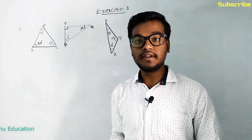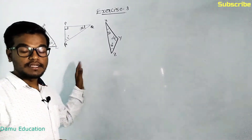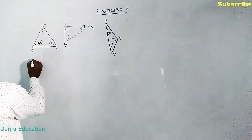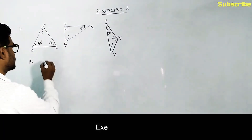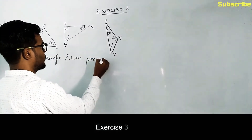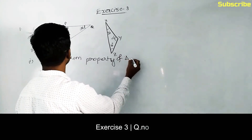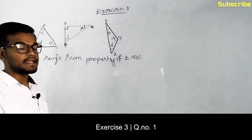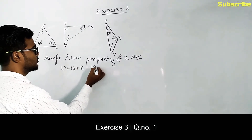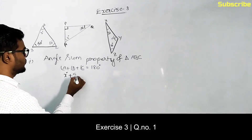We already know the angle sum property of a triangle, which states that if you add all the angles in a triangle, they will give 180 degrees. So from the angle sum property of triangle ABC, angle A plus angle B plus angle C will always equal 180 degrees.